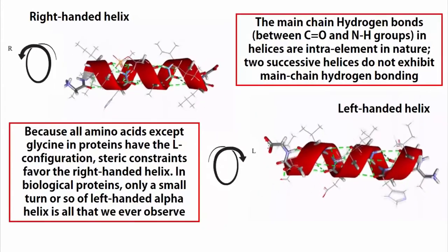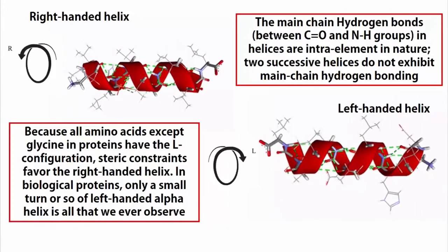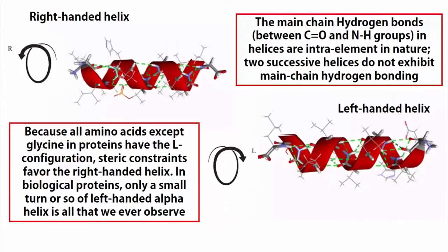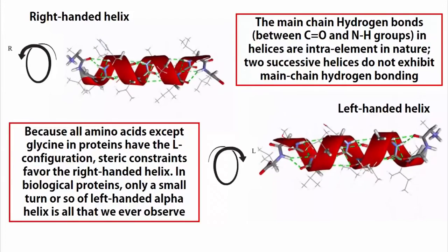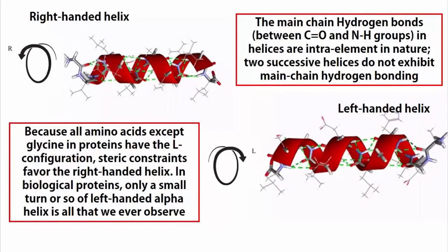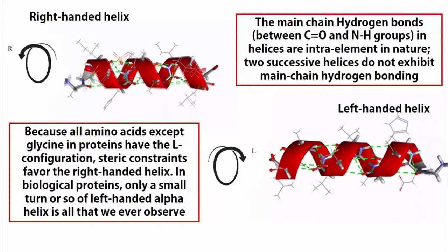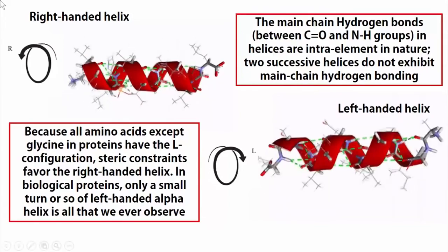The main chain hydrogen bonding pattern in helices are intra-element in nature, meaning two neighboring helices never exhibit any main chain hydrogen bonding.